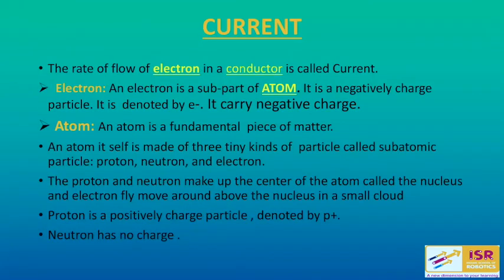Starting with current — current is actually the rate of flow of electrons in a conductor. That means current shows how many electrons are flowing through a circuit. Now, what are electrons? Electrons are basically the negatively charged particles that are responsible for the conduction of current. Electron is a sub part of an atom.